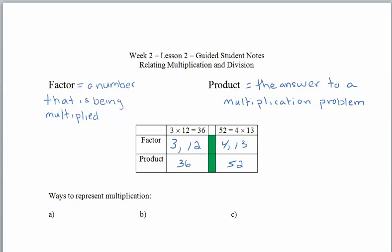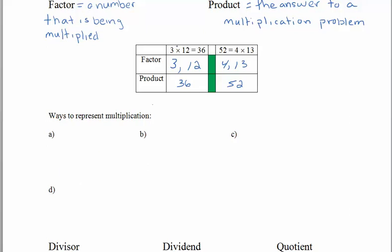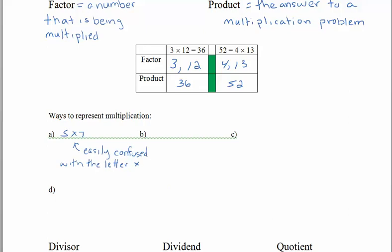There are a lot of different ways to represent multiplication. One way that we've seen is with this little cross sort of times symbol, so you could say 5 times 7. We don't use this times symbol very much, especially once we get started with a little algebra, because it's easily confused. The letter x is probably one of our more favorite choices for a variable when we're working with an unknown quantity.